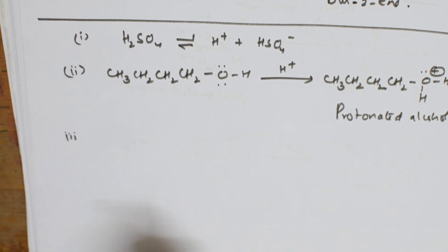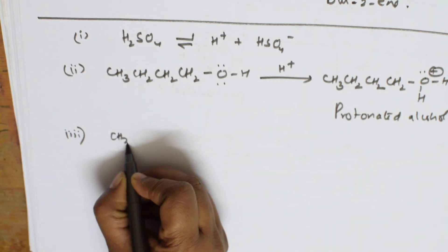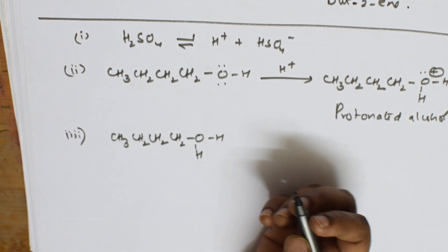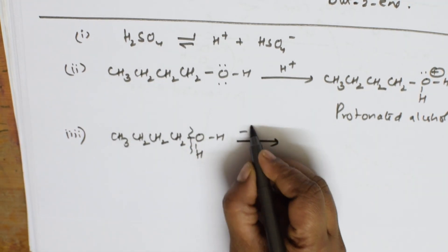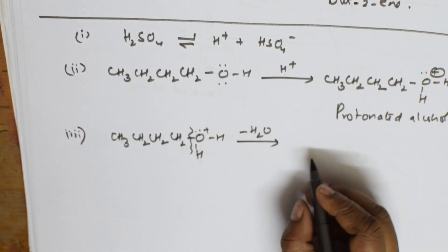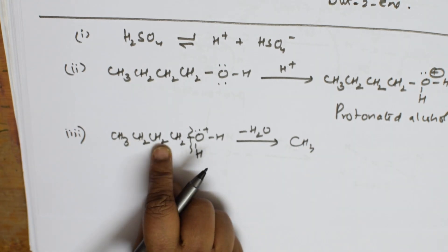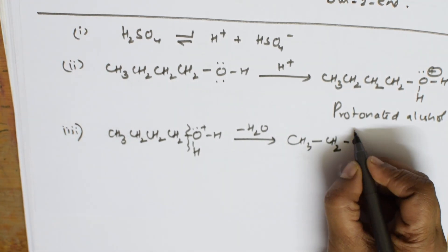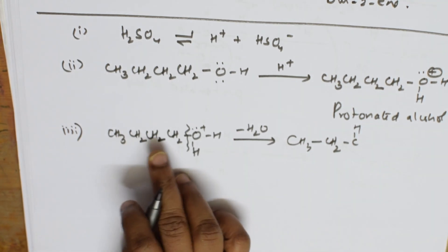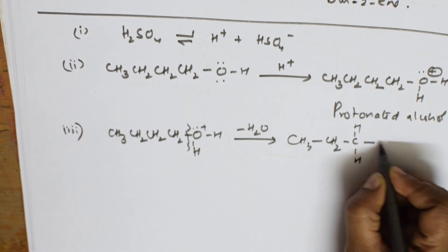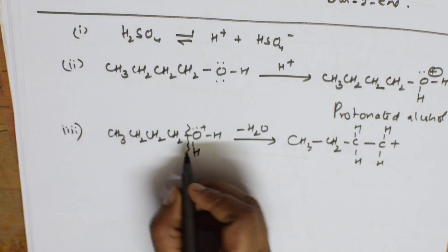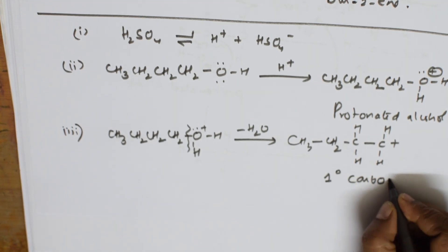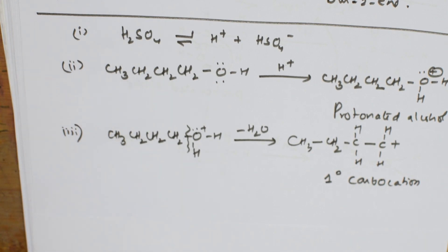In the next step, water is removed from the protonated alcohol. From CH₃CH₂CH₂CH₂–OH₂⁺, the C–O bond cleaves and water leaves, giving CH₃CH₂CH₂CH₂⁺ — a primary carbocation. So a primary carbocation is formed at this stage.